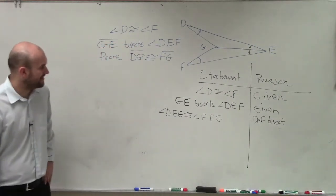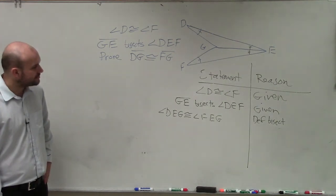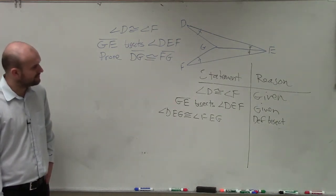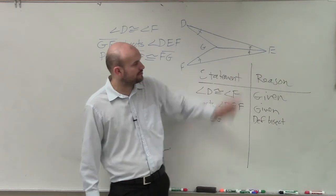All right, so we're at that point. Can you say the last one again? Angle DEG is congruent to angle FEG because the definition of bisection. When you have a line that bisects an angle, it cuts it into two equal parts.